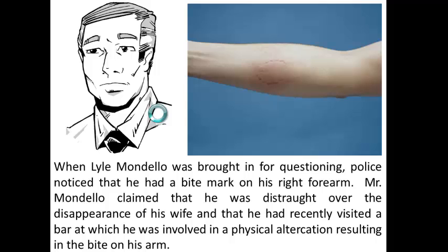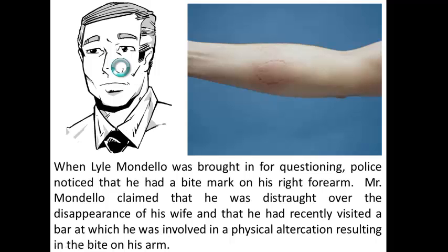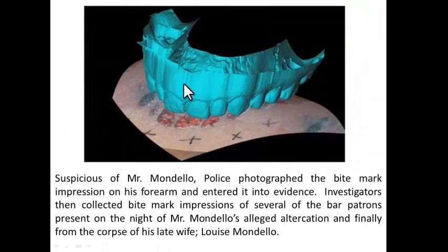When Lyle Mandela was brought in for questioning, police noticed that he had a bite mark on his right forearm. Mr. Mandela claimed that he was distraught over the disappearance of his wife and that he had recently visited a bar at which he was involved in a physical altercation resulting in the bite on his arm. Suspicious of Mr. Mandela, police photographed the bite mark impression on his forearm and entered it into evidence. Investigators then collected bite mark impressions of several of the bar patrons present on the night of Mr. Mandela's alleged altercation, and finally from the corpse of his late wife, Louise Mandela.